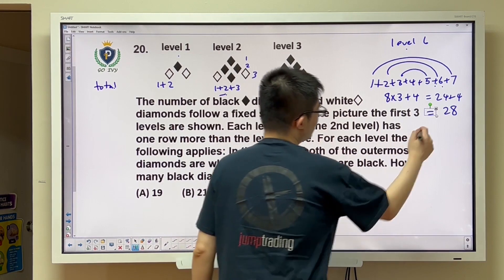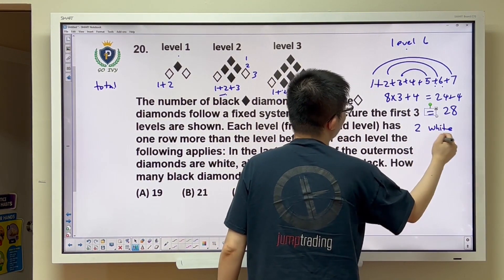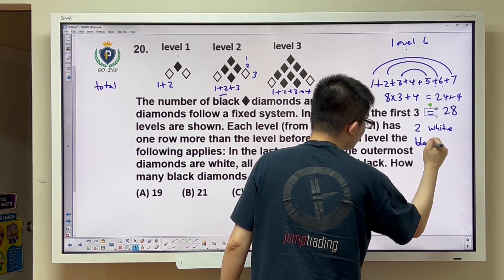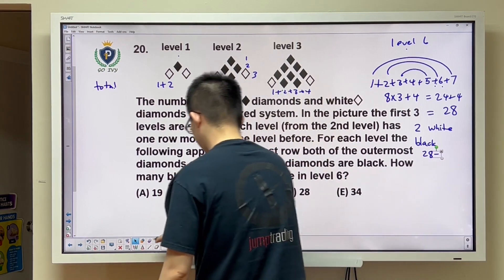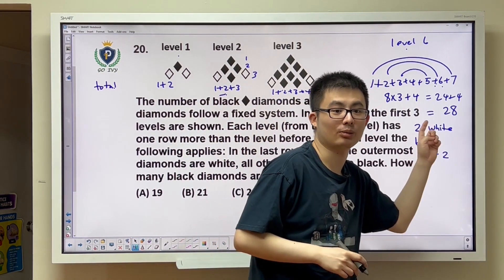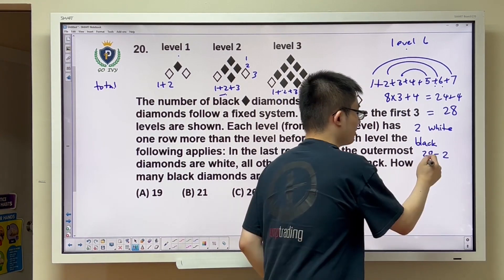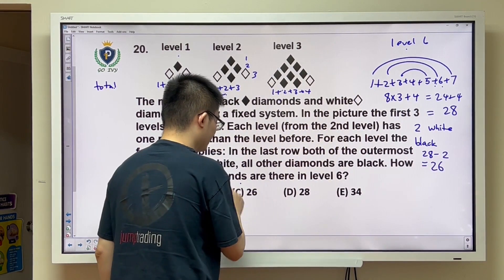But we know that two of them are white. Therefore, the black diamonds: it's going to be 28 minus 2. Because we have 28 in total, we have to take away the 2 as the white. So we have 26 as black. The answer is C.